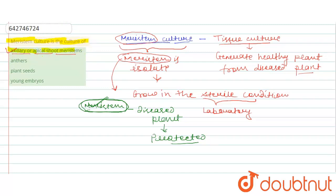we can understand about this explanation. The axillary and apical shoot meristem is used in the meristem culture.